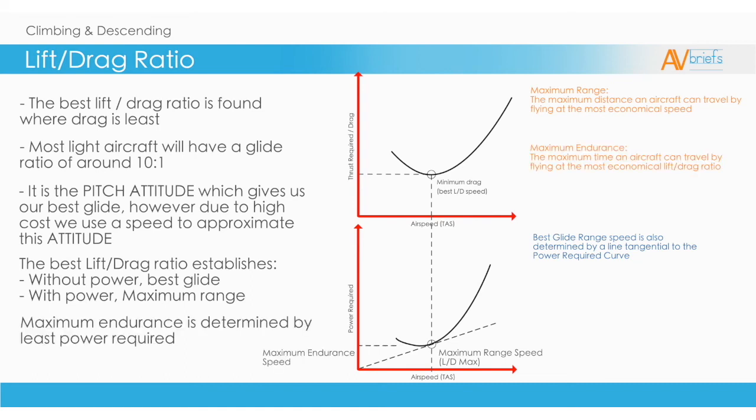The maximum endurance is determined by least power required. This is different to the range. Maximum endurance is the maximum time an aircraft can travel, or to say it another way, the maximum time it can stay in the air by traveling at the most economical lift to drag ratio.